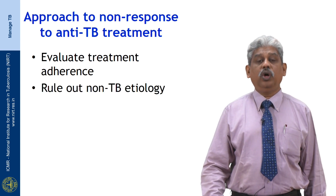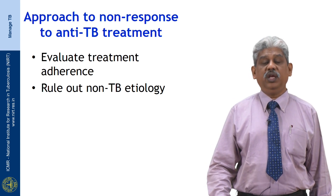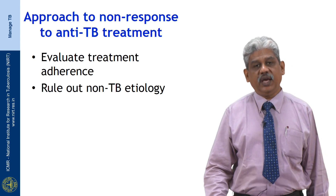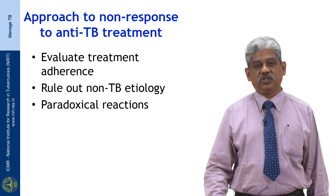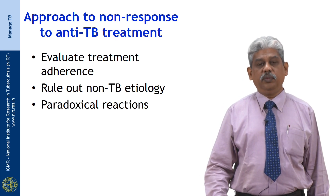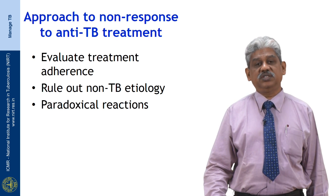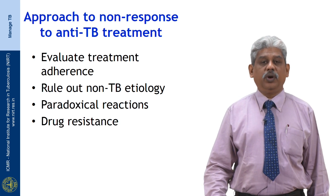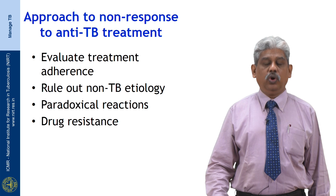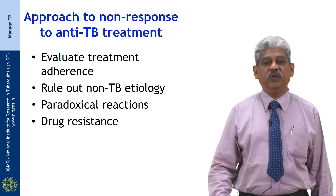We also have to rule out whether the condition is TB at all. If there is no response, reevaluate whether it is a TB case or a non-TB case. Then consider paradoxical reaction, because some patients can develop paradoxical worsening due to dysregulation of the immune system when they had a very weak immune system before. The last and important consideration is drug resistance — but do not jump to drug resistance immediately. These are the pathways to assess in order.